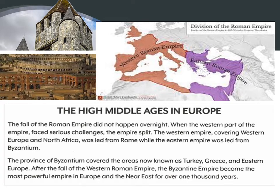History is full of examples of the rise and fall of empires. The Roman Empire is no exception. The fall of the Roman Empire did not happen overnight — there were various reasons which led to its downfall slowly and gradually. When the western part faced serious challenges, the empire split into two: the western empire covering western Europe and North Africa, led from Rome, while the eastern empire was led from Byzantine.